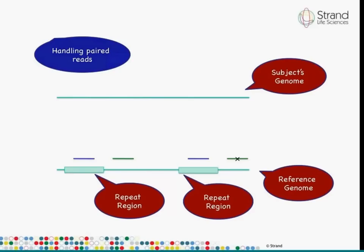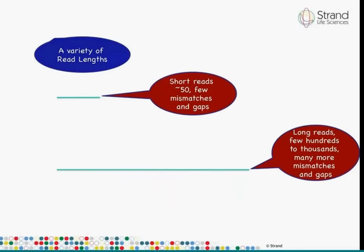The aligner must also handle cases where paired reads are at unexpected distances — much further away, much closer, on different chromosomes, or out of alignment. Flagging all of those things is important from the perspective of identifying structural variants further down the line.